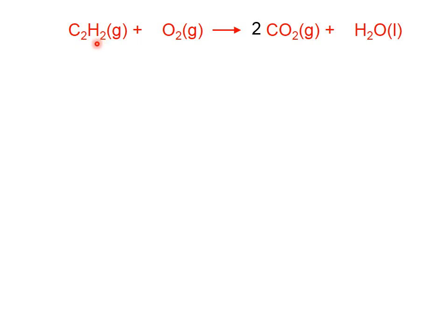Now on the reactant side I'm seeing two hydrogens, and way on the right, on the product side, I'm seeing two hydrogens. That looks good. So now let's count up the oxygen atoms on the product side. Two times two is four, plus one is five. Unfortunately there is no whole number coefficient that can be put here that will give us five oxygen atoms.